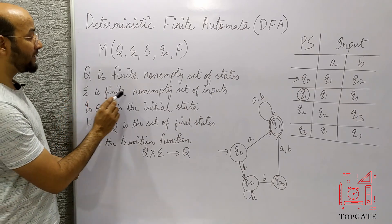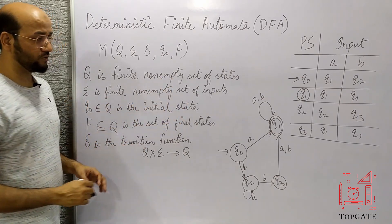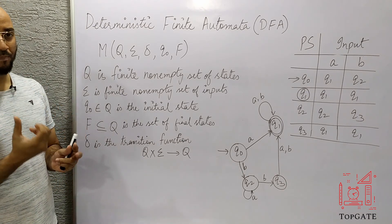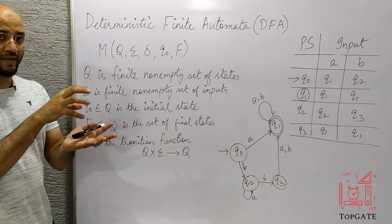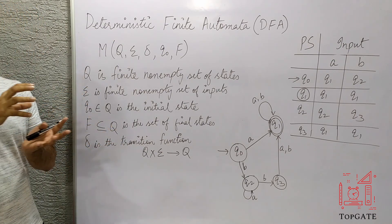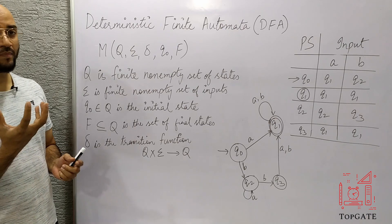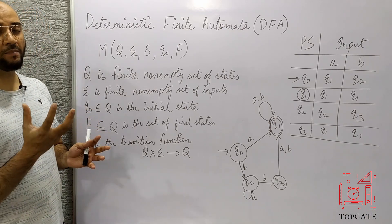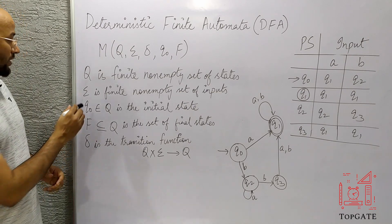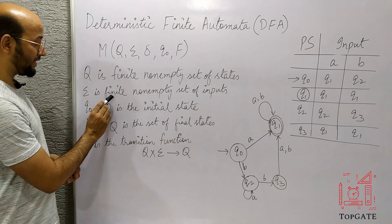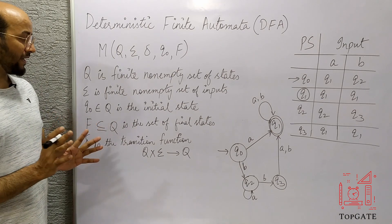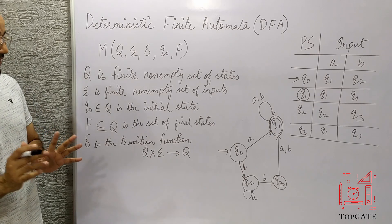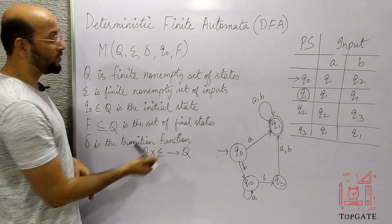Sigma is a finite non-empty set of inputs. Sigma is the first thing in a language — a symbol. Out of those symbols, we take out some alphabets and call them input alphabets. This alphabet will be used to make a particular string. Sigma should be finite and non-empty, meaning some alphabet should be there.